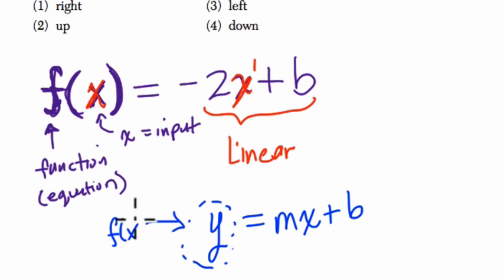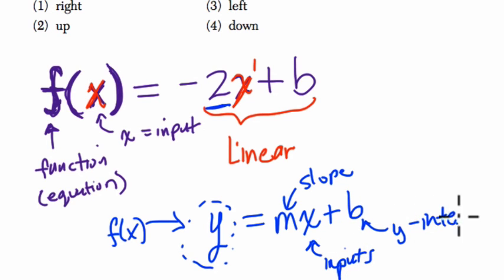So you can think of that as f of x. m is the slope, so our slope here is negative 2. x are the inputs that we plug into our equation. And b is the y-intercept. It's the point where the graph crosses the y-axis.